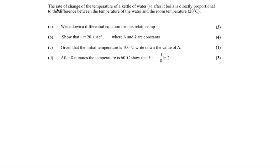Our final question has more context. The rate of change of the temperature of a kettle of water, measured by y after it boils, is directly proportional to the difference between the temperature of the water and the room temperature, which is 20 degrees. The rate of change is modelled by differentiation — in this case dy over dt — and directly proportional means there's a constant of proportionality k. So the difference is y minus 20, giving dy/dt equals k times y minus 20.